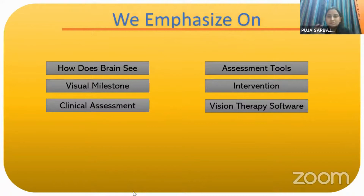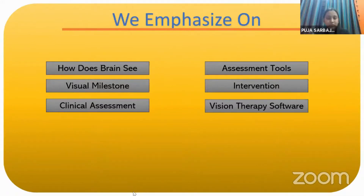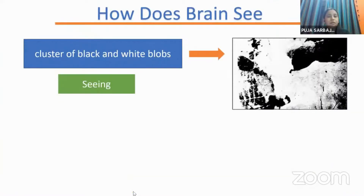How does the brain see? Here we can see a cluster of black and white blobs. If we mix these blobs and make a picture, it comes out as a familiar picture — a cow's face. This is called vision. Every part of our brain helps us to see. Earlier, the conception was that vision comes only from the occipital lobe, but the next slides will show what exactly happens. The occipital lobe handles color vision and visual field.